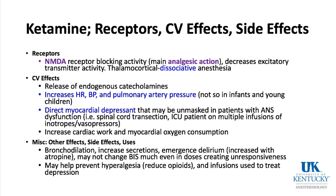Ketamine increases cardiac work and myocardial oxygen consumption — potentially problematic in coronary artery disease. Other effects: ketamine is a bronchodilator and increases secretions via cholinergic stimulation. It can cause emergence delirium, worsened by atropine (which crosses the blood-brain barrier); glycopyrrolate is preferred to reduce secretions because it does not cross the blood-brain barrier. Ketamine has little effect on BIS. At low-dose infusions, ketamine is used perioperatively to reduce opioid use, prevent hyperalgesia, and even treat intractable depression in infusion clinics.